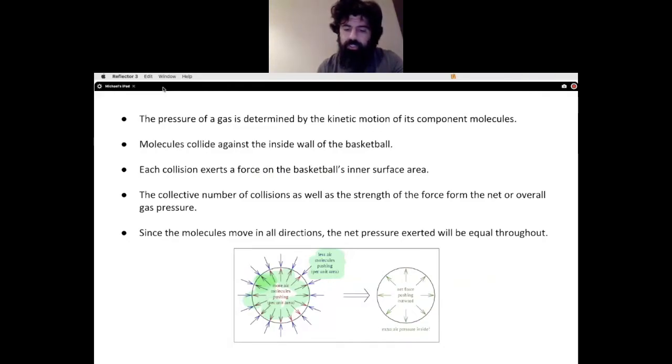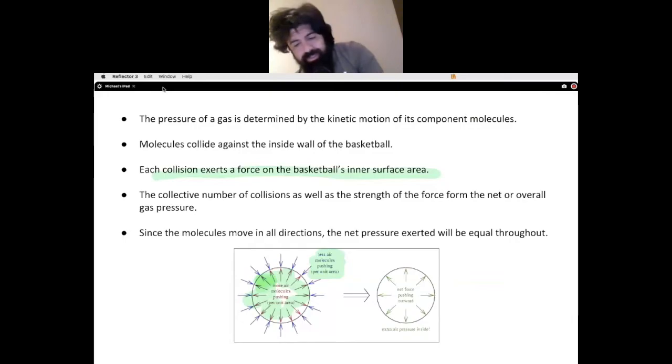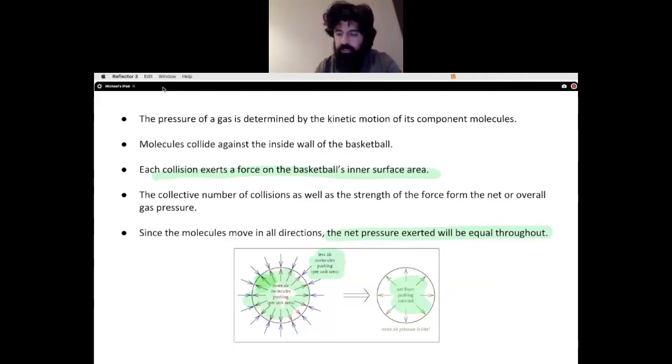Each collision exerts a force on the basketball's inner surface area and the collective number of collisions as well as the strength of the force form the net or overall gas pressure. Since the molecules move in all directions, the net pressure exerted will be equal throughout the entire ball. There's going to be extra air pressure found on the inside of the ball.